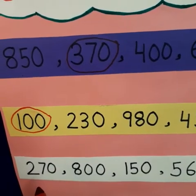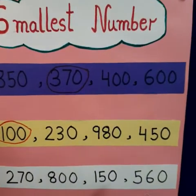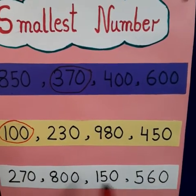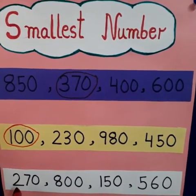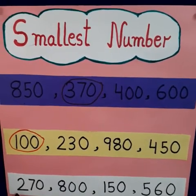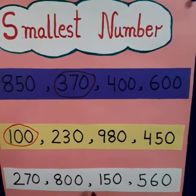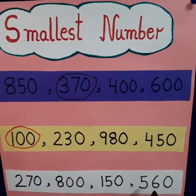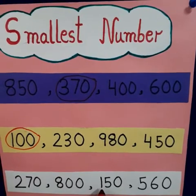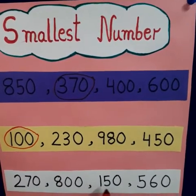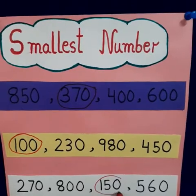The next set has 270, 800, 150, and 560. Again, we will look at the digits in the hundreds place: 2, 8, 1, and 5. So which one is the smallest? Yes, 1. So 150 will be the smallest number and we will circle this.